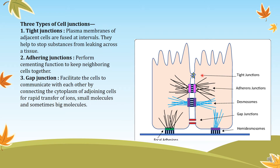Tight junctions: the plasma membranes of adjacent cells are fused at intervals, helping to stop substances from leaking across the tissue. Nothing can leak out, which is why the plasma membranes are fused at certain regions. Adhering junctions perform a cementing function to keep neighboring cells together, making a glue-like structure. Gap junctions facilitate communication between cells by connecting the cytoplasm of adjoining cells for rapid transfer of ions, small molecules, and sometimes larger molecules. There are certain gaps between adjacent cells through which substances can easily pass from one cell to another. So basically three types of cell junctions can be seen in epithelial tissue: tight junction, adhering junction, and gap junctions.